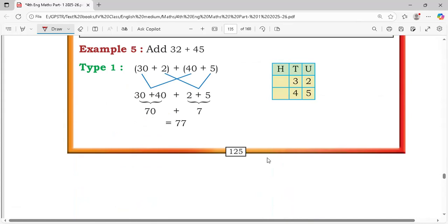Add 32 plus 45. 30 plus 40 is 70 plus 2 plus 5, that means 77.